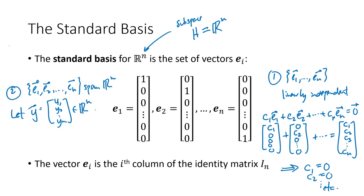...we can build y as a linear combination of the e's by multiplying e1 by y1 — that puts y1 in the first spot and zeros everywhere else — y2 multiplied by e2 puts y2 in the second spot, and yn times en puts yn in the last spot. When we add all that up we get our original vector y. That shows every vector in Rn can be written this way, confirming this is a basis for Rn. But it's just one basis — there are lots of different bases we can construct for Rn.